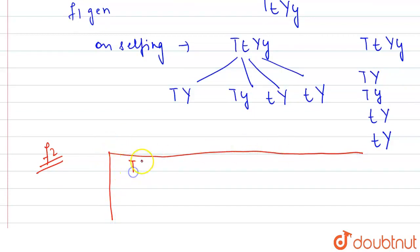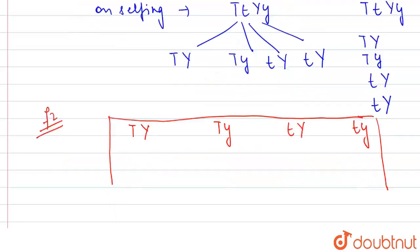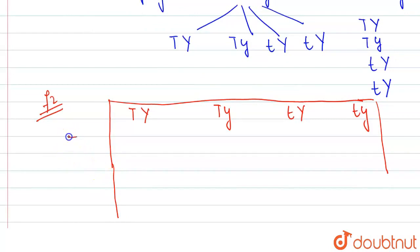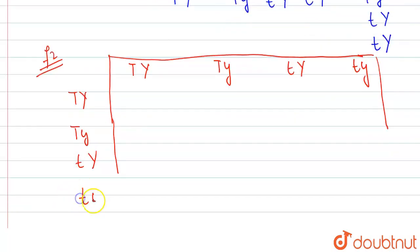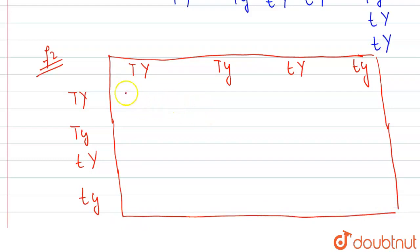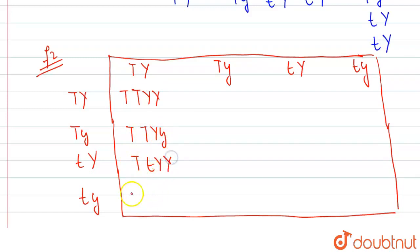The Punnett square is basically used to represent the cross. We will write our gametes in such a way that the cross is easy to work out. On one side we write TY, Ty, tY, ty, and the same gametes on the other side. When we form the first cross, it will be capital T, capital T, capital Y, capital Y — that is TTYY, which is tall with yellow seeds.